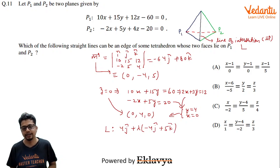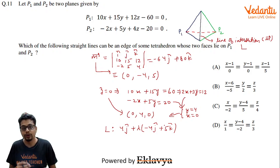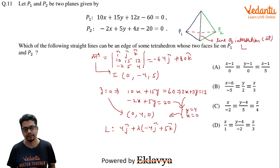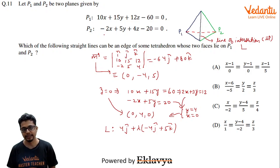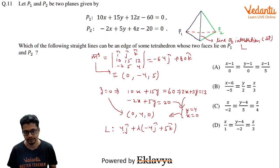We verify the result: the point (0, 4, 0) satisfies both plane equations. Also, the direction vector 0i - 4j + 5k is perpendicular to both normal vectors (dot products vanish). So we are confident this is the correct line of intersection L.